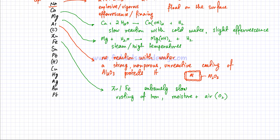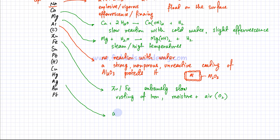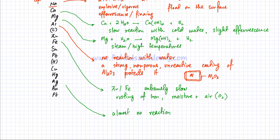As you move further down the group, reactivity drops to almost nothing. For example, gold would take centuries or even millennia to have any sort of reaction with water. Their reactivity decreases so much that they have almost no reaction with cold water or any form of water.